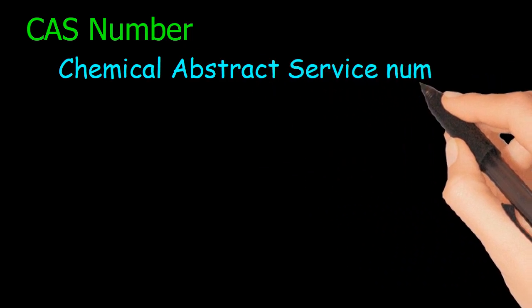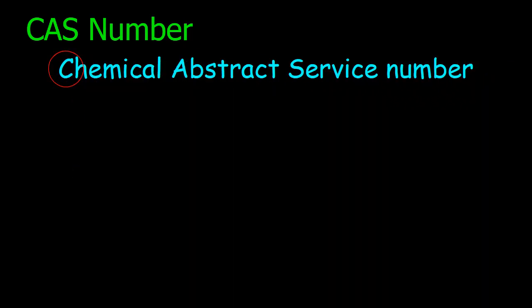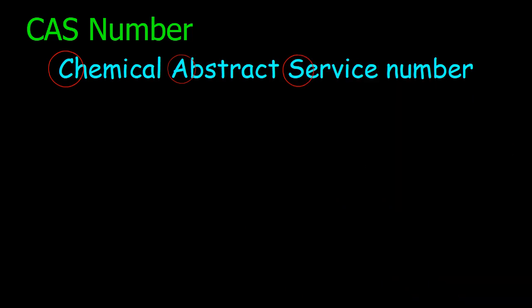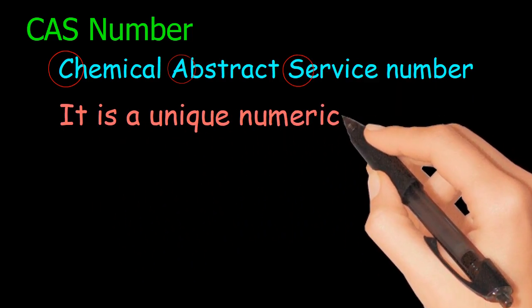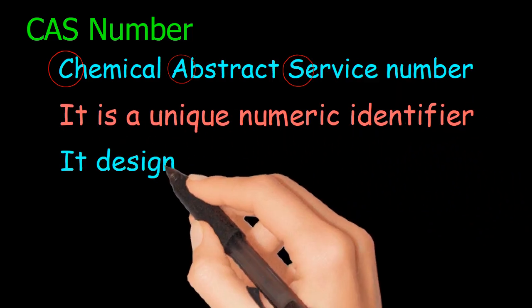CAS number. CAS is a division of American Chemical Society. Chemical Abstract Service Number. It is a unique numeric identifier.